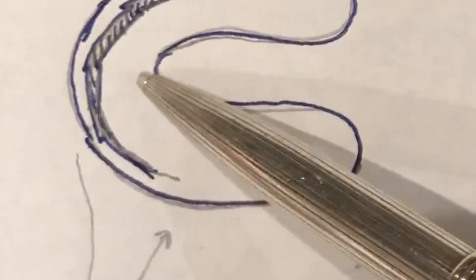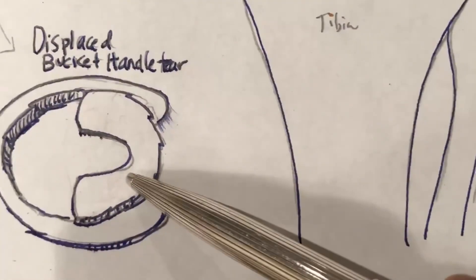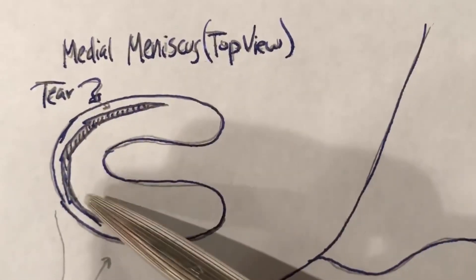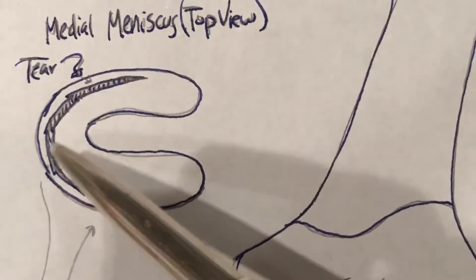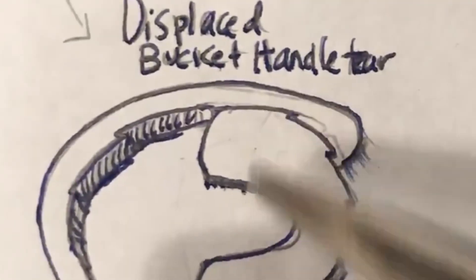Once this becomes displaced, this portion right here flips and it looks like this. So this is a non-displaced longitudinal tear, but once it starts to flip back and forth, that's called a bucket handle tear.